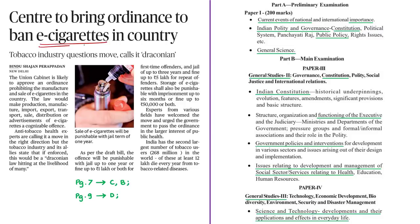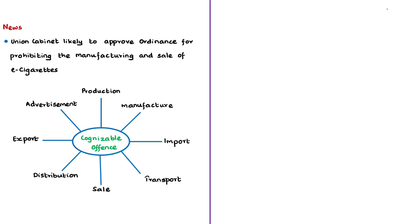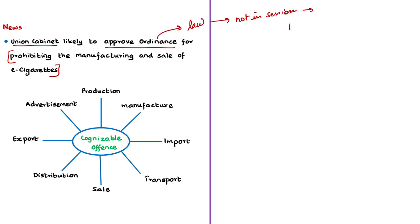The first news article is about e-cigarettes. This discussion can be linked to the syllabus given here for your reference. The news article states that the union cabinet is in favor of approving an ordinance for prohibiting the manufacturing and sale of e-cigarettes in the country. An ordinance is a law that can introduce legislative changes. The power to make laws is with the legislature, but parliament does not pass an ordinance. When parliament is not in session and immediate action is needed, the president can issue an ordinance — this provision is provided by the constitution.